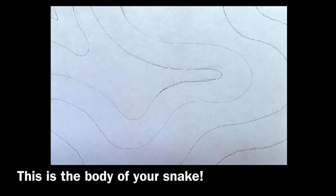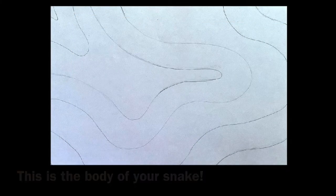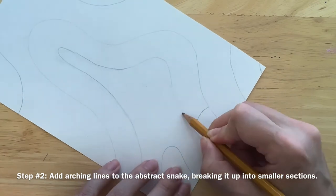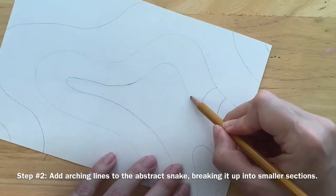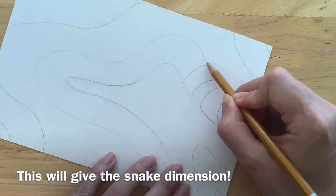This is the body of your snake. Add arching lines to the abstract snake, breaking it up into smaller sections. This will give the snake dimension.